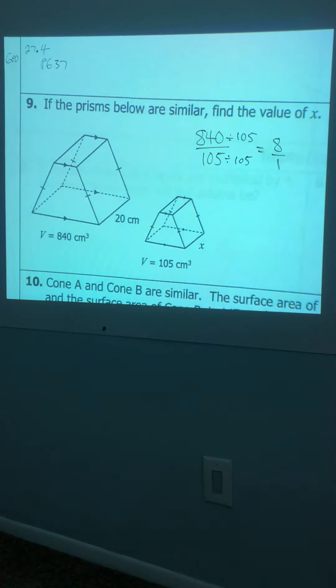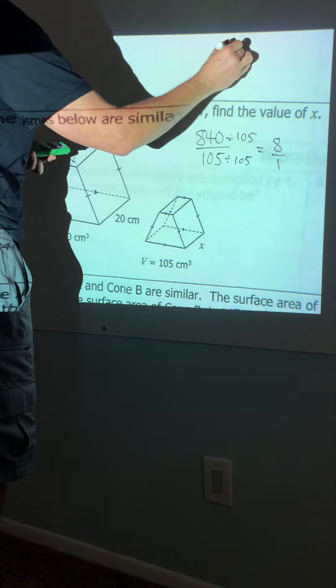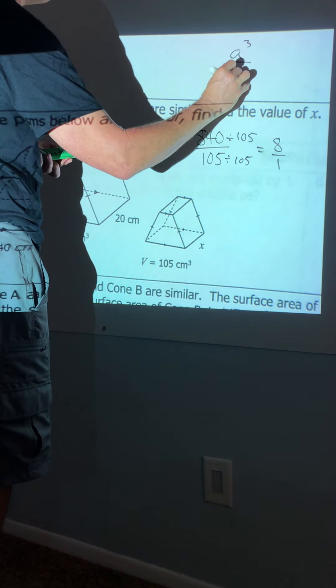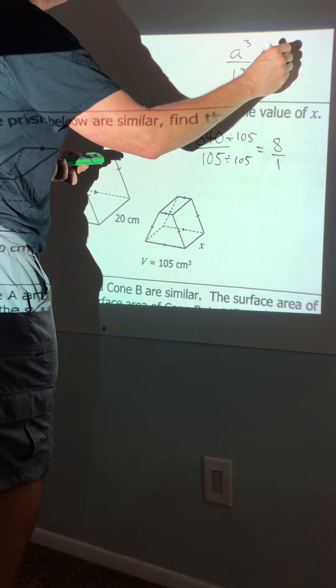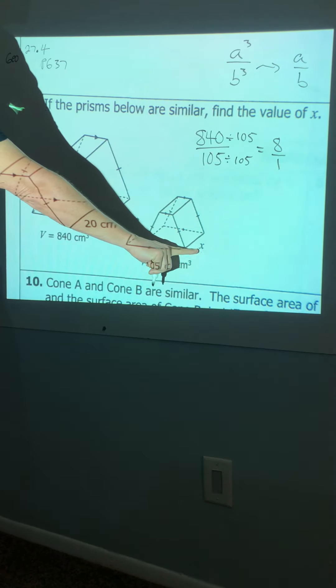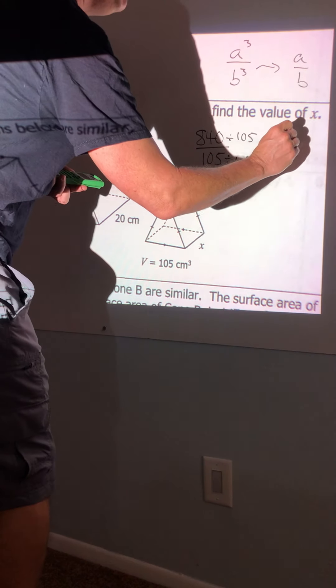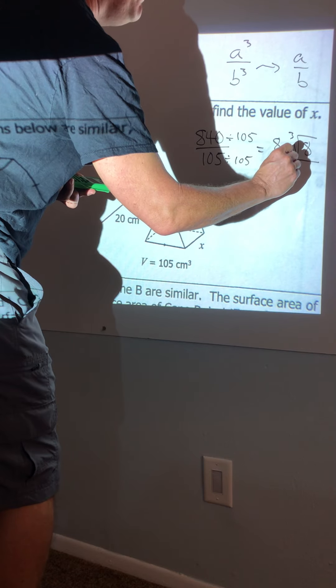Okay, now, was that surface area, parts, or was that volume? Oh look, it was V for volume. So anytime it's volume, you need to think A to the third power over B to the third power. So you're going to have to undo that to get to the parts ratio. Because they want us to find this part eventually. So what you're going to do is you're going to cube root eight, and you're going to cube root one.